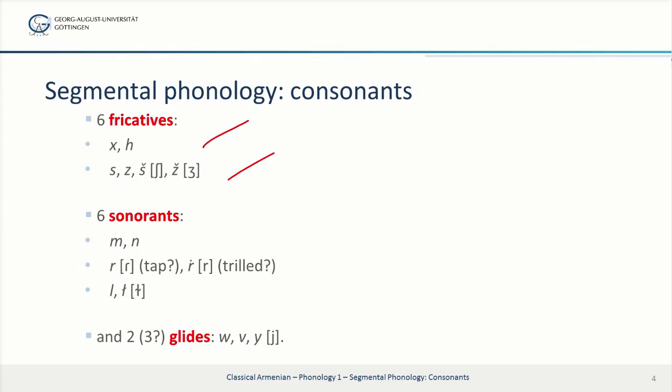There were six sonorants, the nasals M and N. Two sounds transcribed with different kinds of R: R without a dot on top, which was presumably a kind of tap similar to the American English intervocalic T or D.